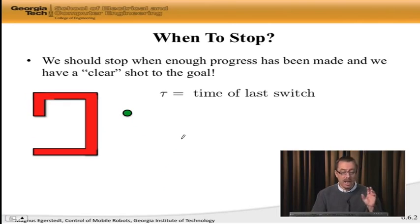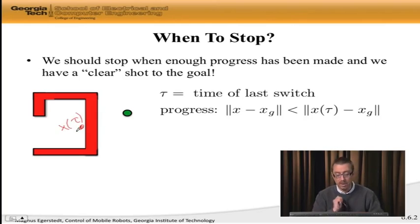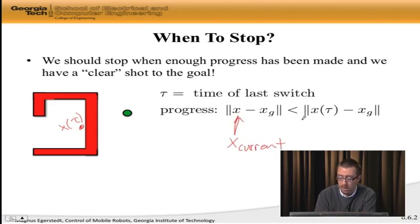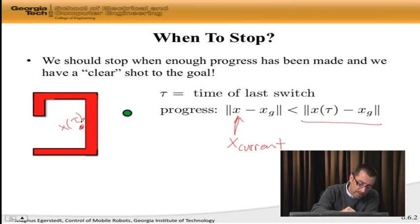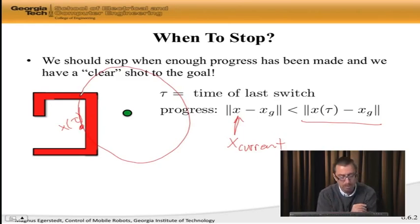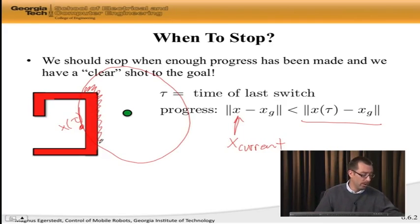Let's say that I started following walls at time tau. So let's say that I'm here, x at time tau. That's where I am. Well, then progress, sufficient progress, can simply say that the current position, this is the current position x current, it needs to be closer to the goal than where I was when I started my follow wall. So if I draw a circle here at this distance around the goal, let's pretend that this was a perfect circle, then any point here is going to be closer to the goal than where I started. So here are positions where I'm allowed to stop following walls. But that's not enough.